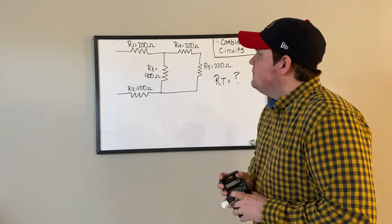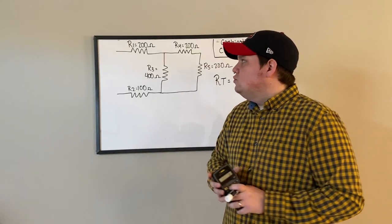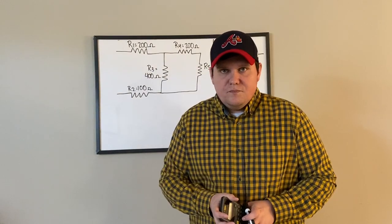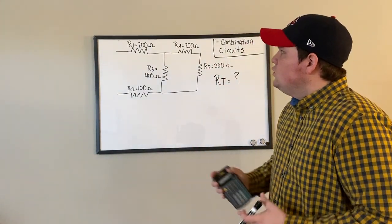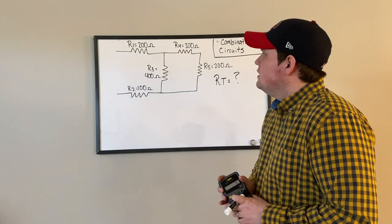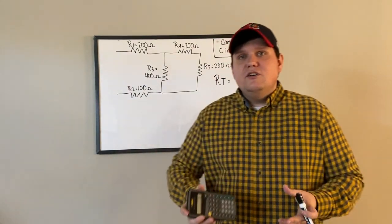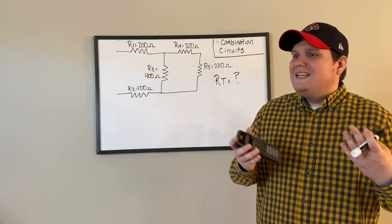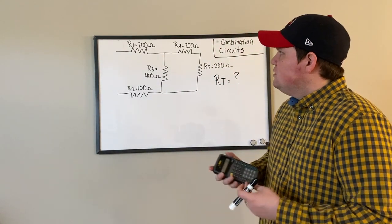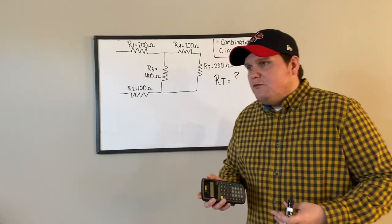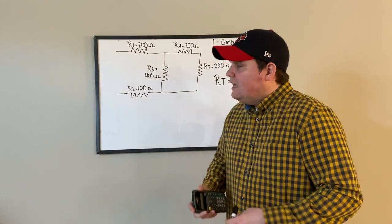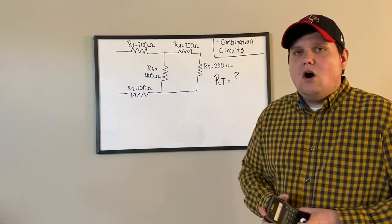So let's go through those rules quickly. In a series circuit, current only has one path to travel from point A to point B. Therefore, current in a series circuit is going to be the same through all components — total current is the current everywhere.